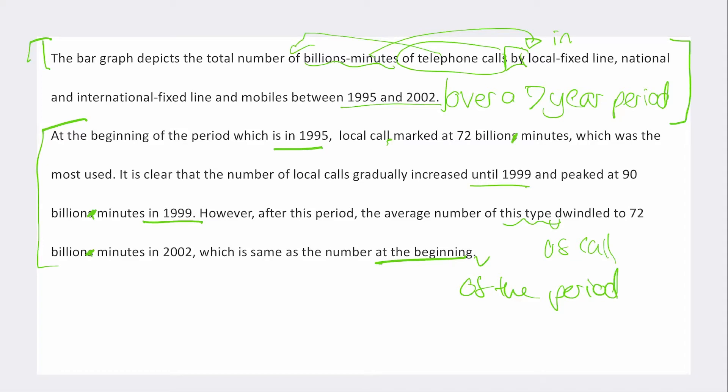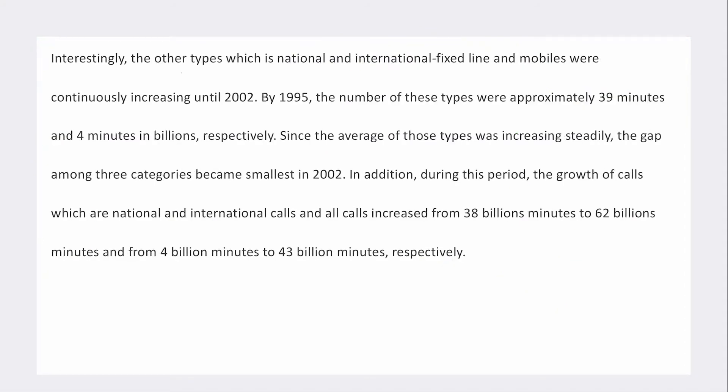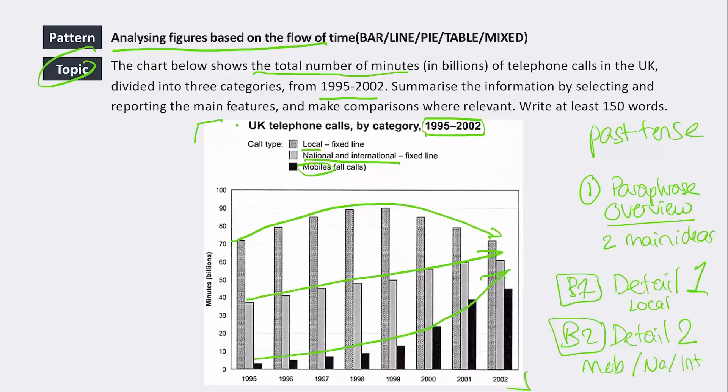So interestingly, the other types of calls which are national and international fixed line and mobile were continuously increasing until 2002. By 1995, the number of these types of calls were approximately 39 minutes and 4 minutes in billions respectively. This is confusing. Was it 39 in billions or 4 minutes in billions?